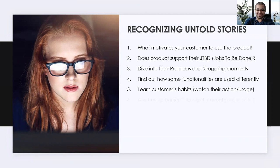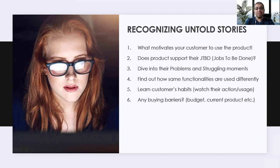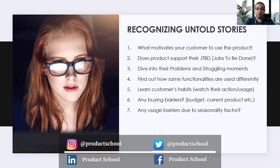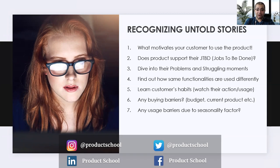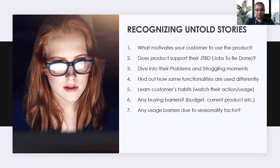You may also want to find out buying barriers. At times the barriers could be budget constraints, or they might have another product from the market with a license expiring in six months, so they may not want to buy your product right now. Indirectly find out if there are any barriers to using or buying your product. Another item could be seasonality barriers — some products might not be very useful at certain times of year or in particular seasons. Try to find that out, as it will definitely help you.